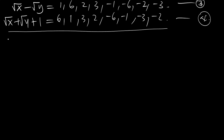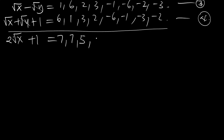Now adding equation 3 and equation 4, the radical cancels because it has opposite signs. So what you now get on the left-hand side is 2 times x plus 1, and 1 plus 6 is 7, so this is 7. This one is 5.